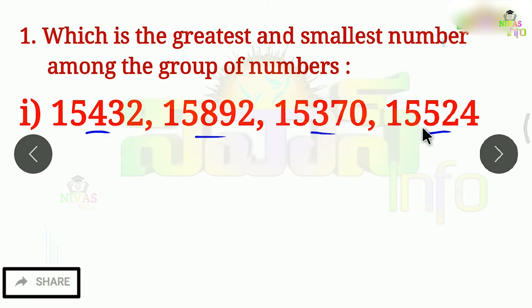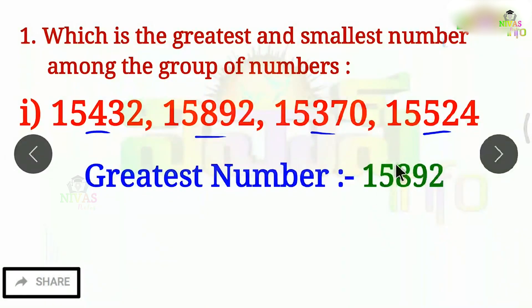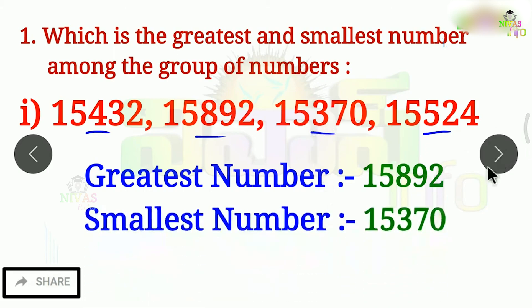Looking at the third digit: 4, 8, 3, 5. What is the big number? The big number is 8. So the biggest number is 15,892. Next is the smallest number — using the same method, the small number comes from digit 3. That's why the smallest number is 15,370.